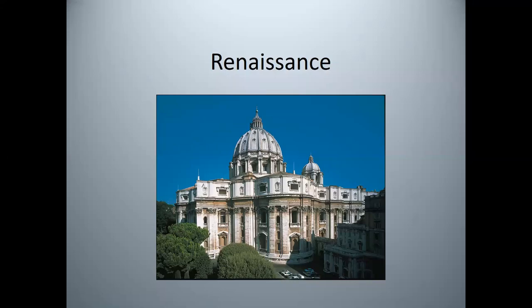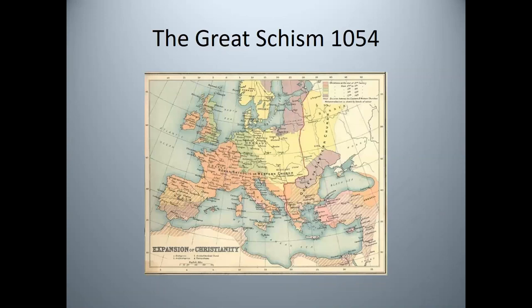To begin our study of the Renaissance, let's review the background of how the Roman Church became so powerful. In 1054, the first Great Schism divided the Christian world into Roman Catholicism in the West and Greek Orthodox in the East. The Pope, who resided in the Vatican, was the leader of the Roman Catholic Church and the de facto ruler of Western Europe.